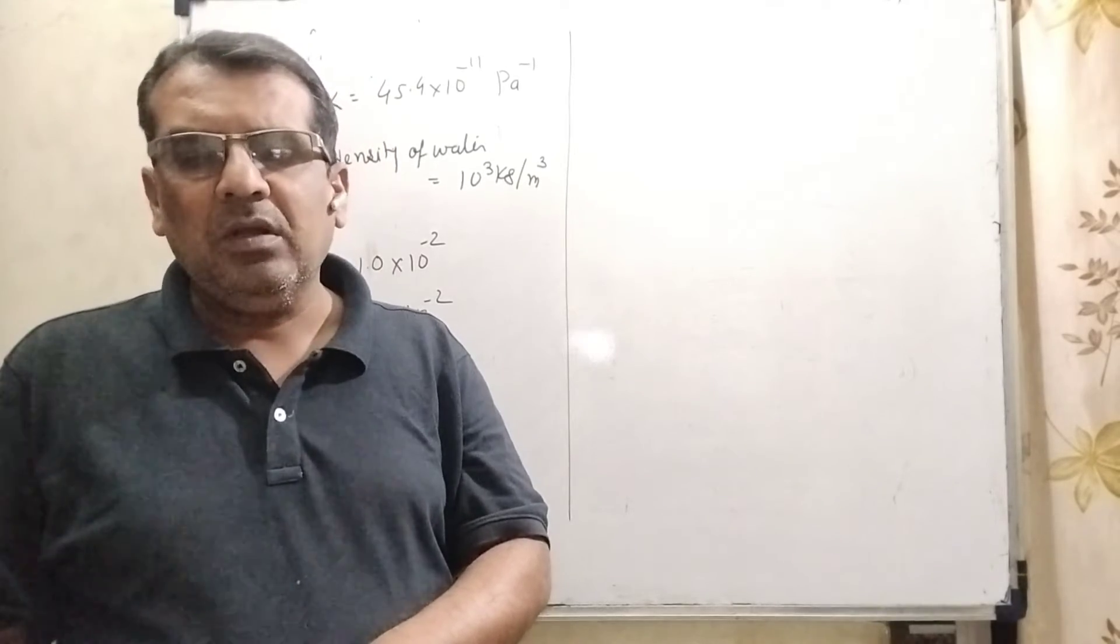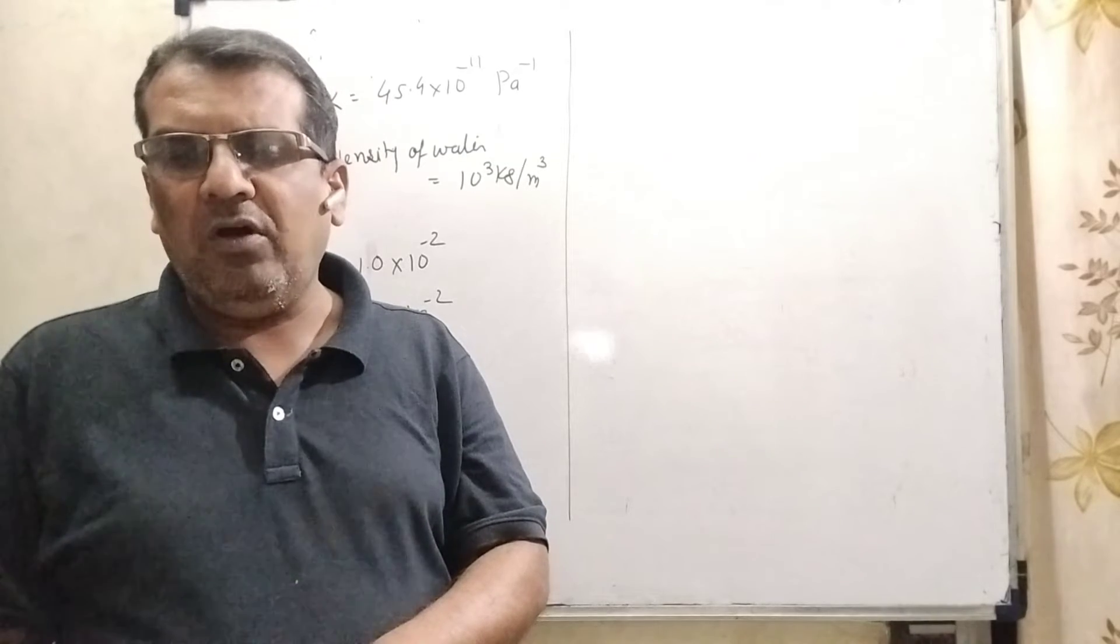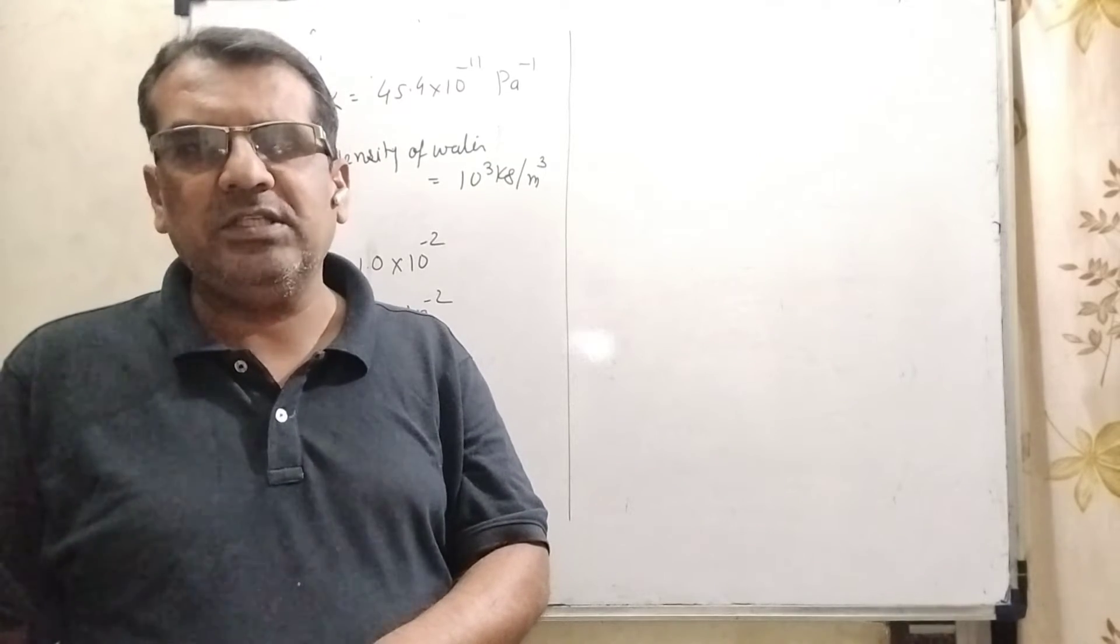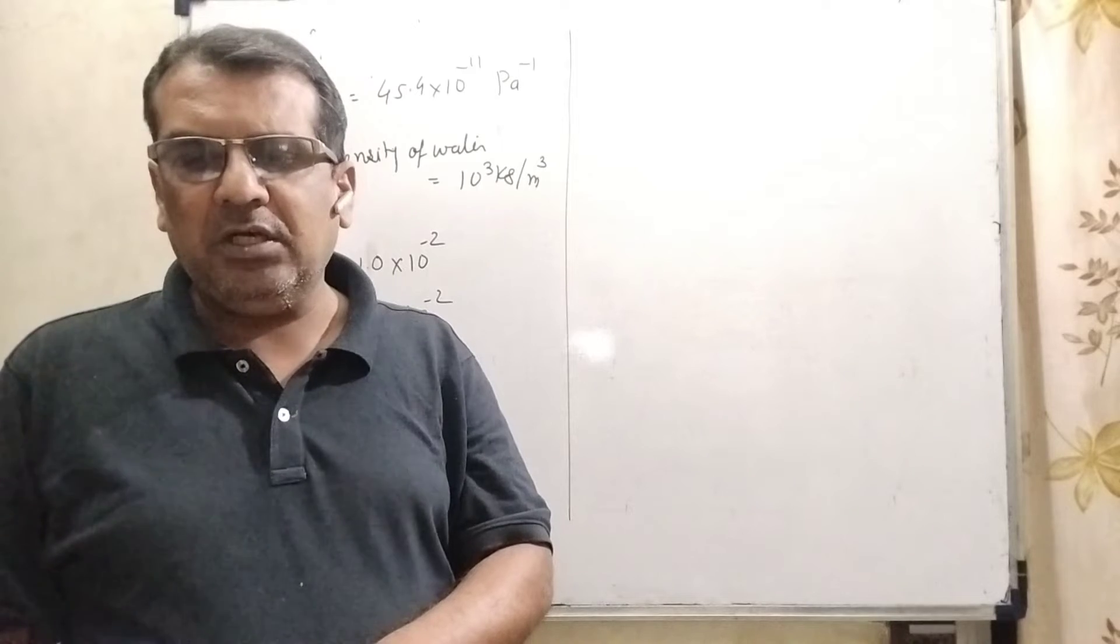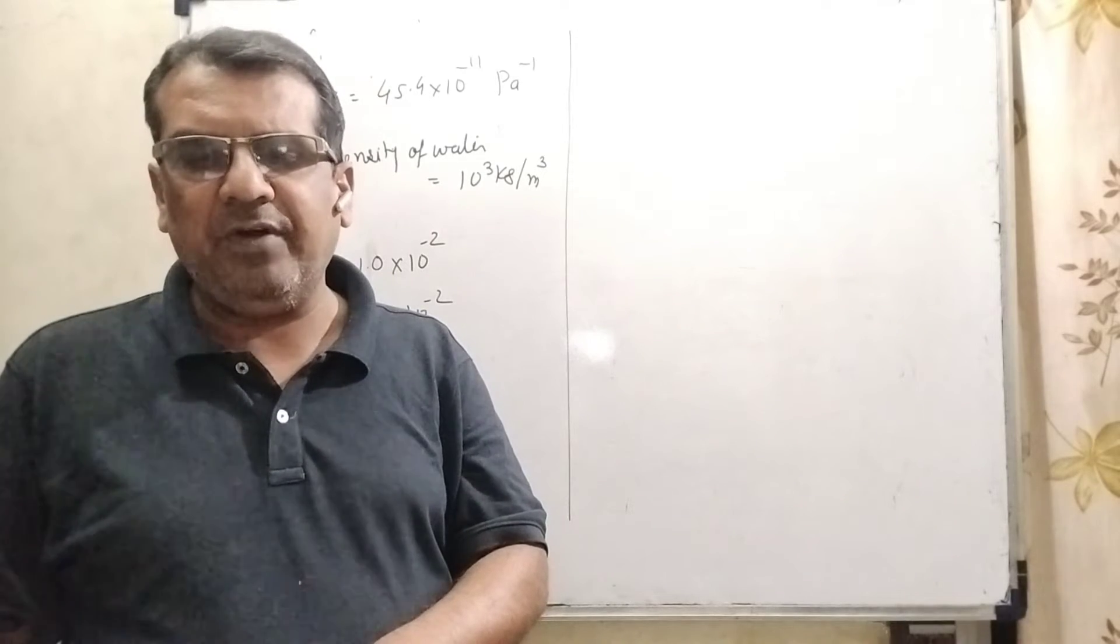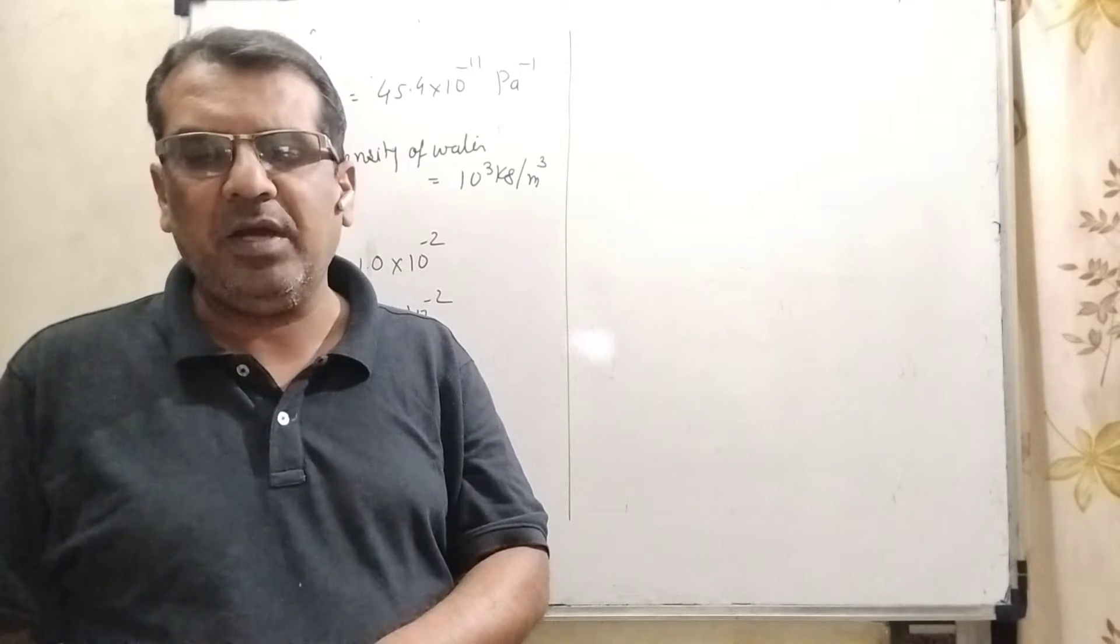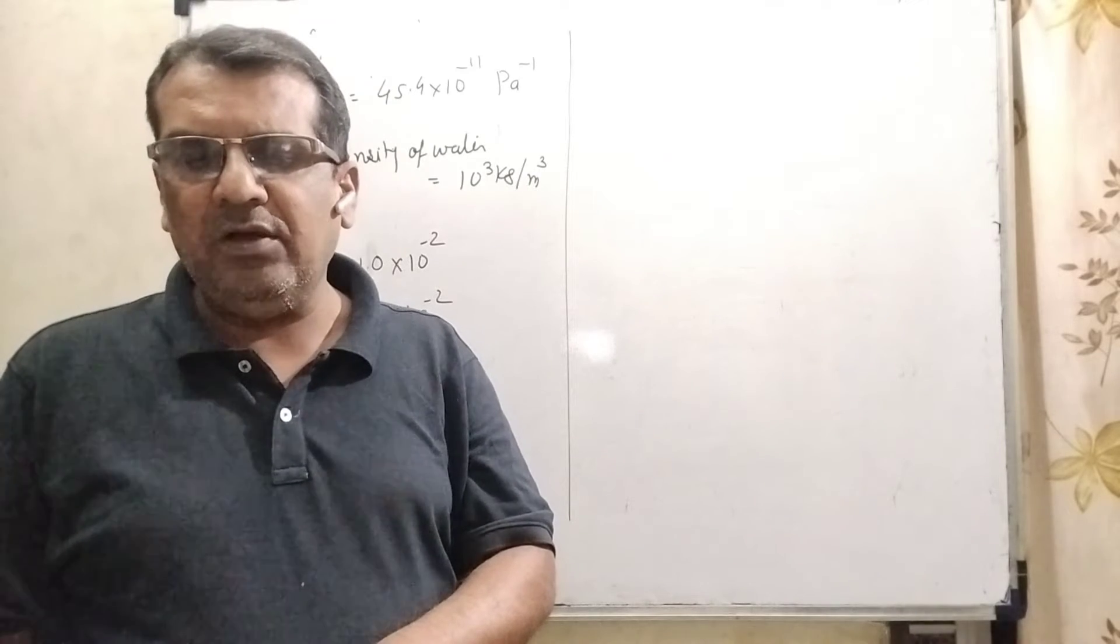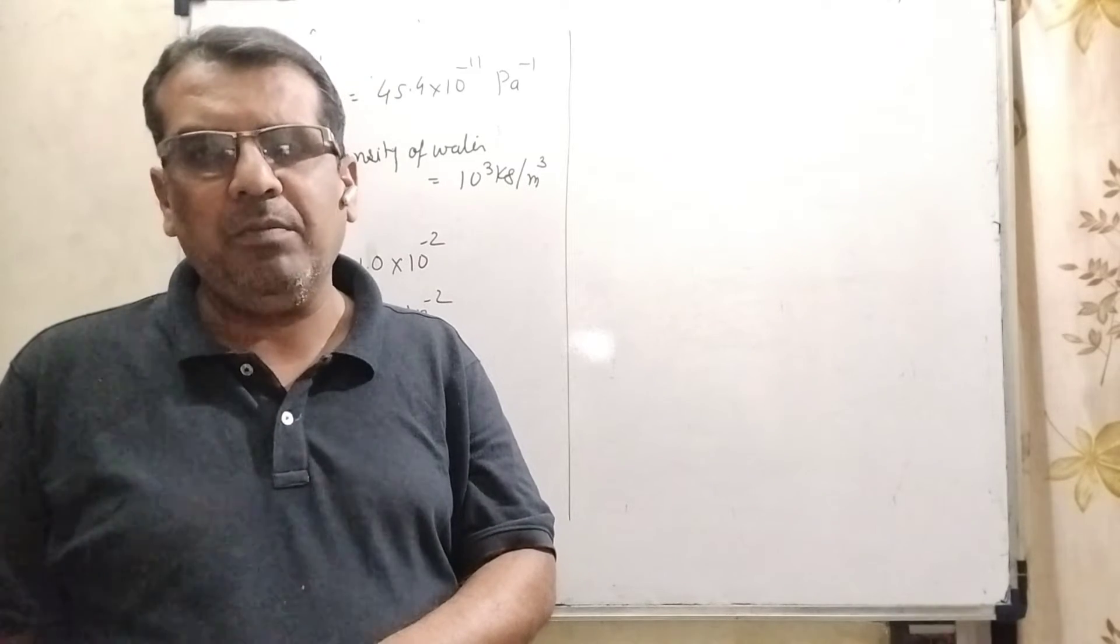Here is the question. The approximate depth of an ocean is 2700 meters. The compressibility of water is 45.4 × 10^-11 per Pascal, and density of water is 10^3 kilogram per meter cube.